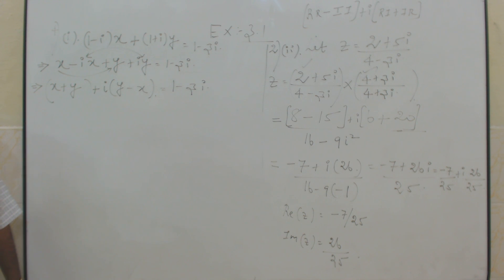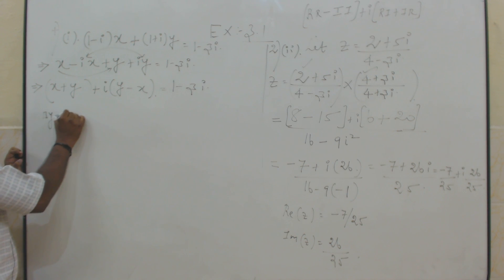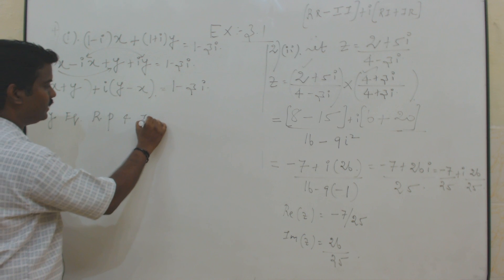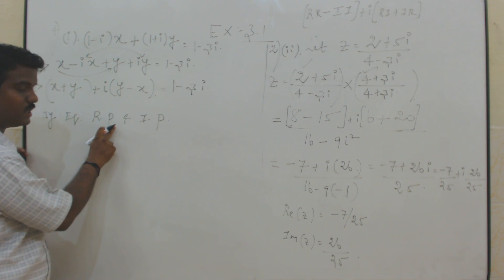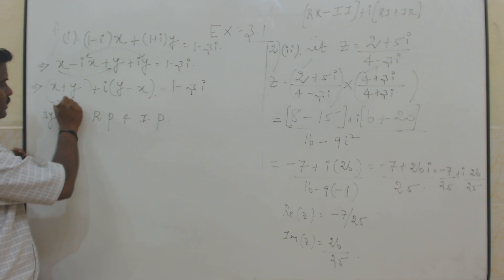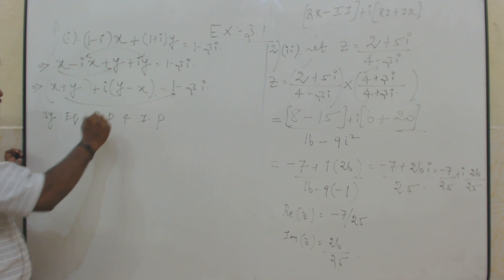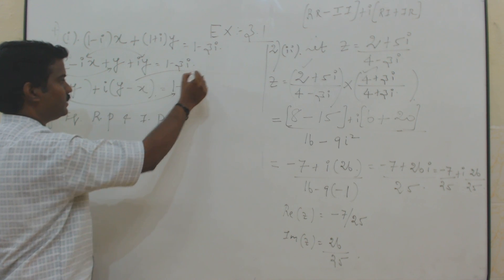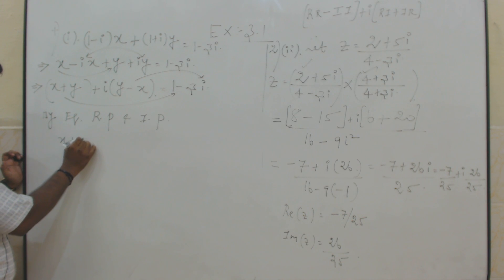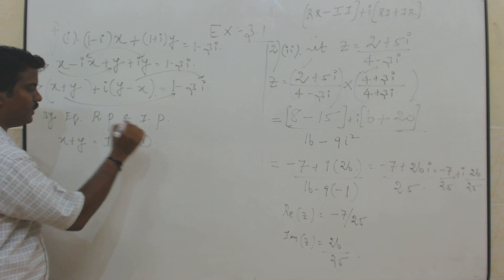We are going to equate the corresponding real part and the imaginary part. The real part is abbreviated RP, and IP is the short form for imaginary part. The real part is the term without i, and the imaginary part is the term with i. So equating real parts: x plus y is equal to 1 — call this equation number 1.